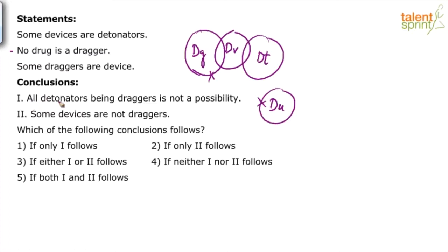Conclusion 1: all detonators being draggers is not a possibility. Is it not possible that all detonators are draggers? He is talking about a possibility — he is saying it is not possible. I think it is false, because all detonators being draggers is possible. We can draw a diagram and prove that all detonators can be draggers.